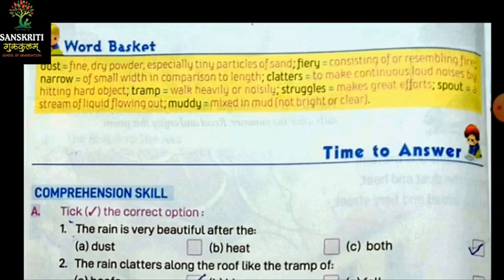Next is spout. Spout kya hota hai? A stream of liquid flowing out. Jis mein se extreme type kya hota hai — jis mein se liquid, matlab paani, magra jaisi cheezein nikalti hai. Pipe ya tube, jis mein se liquid bhaar aata hai.